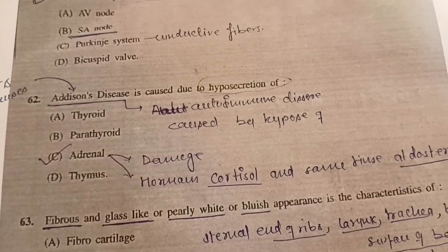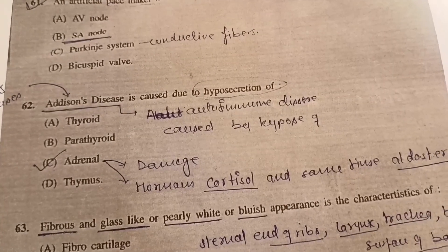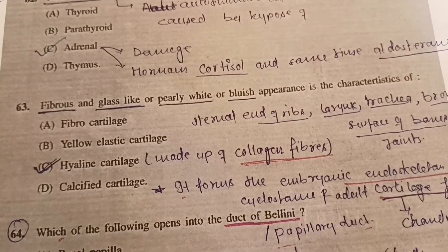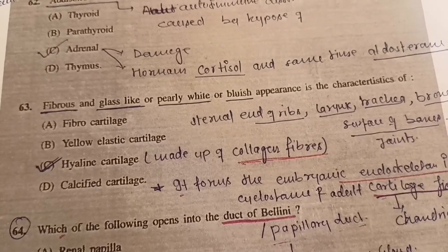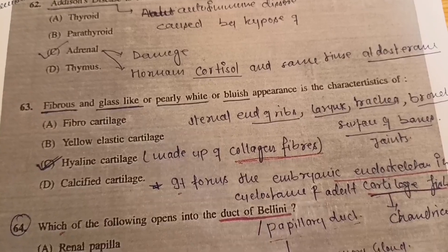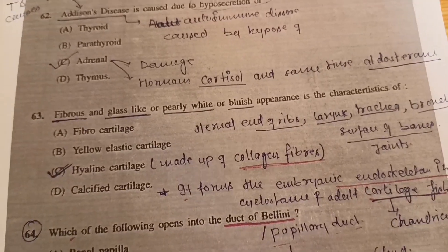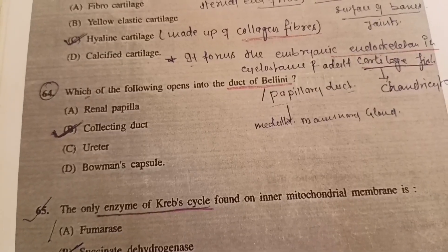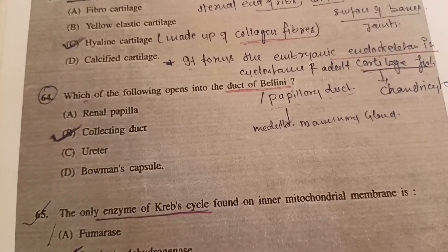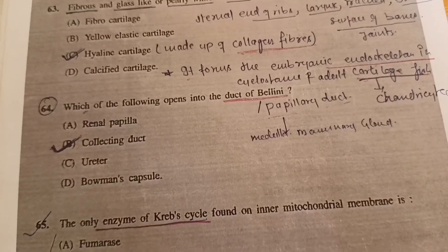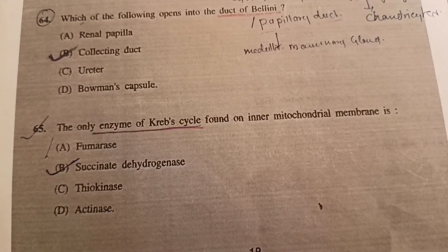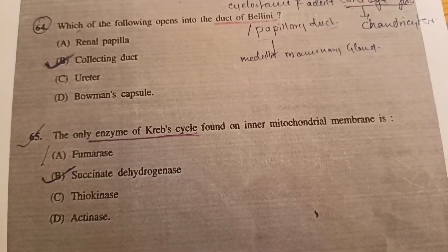Question 62: Addison's disease is caused due to — answer will be C, adrenal gland. Question 63: Fibrous and glass-like or pearl-white or bluish appearance is the characteristic of — answer will be C, hyaline cartilage. Question 64: Which one of the following opens into the duct of Bellini? Answer: B, collecting duct.